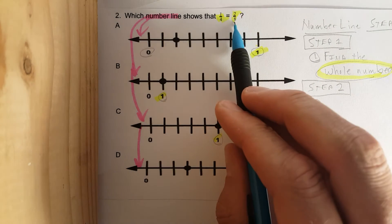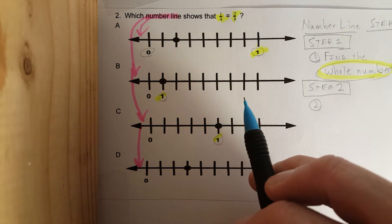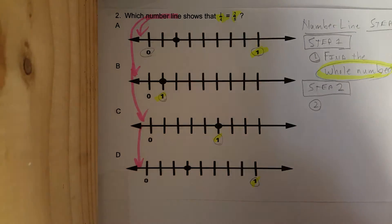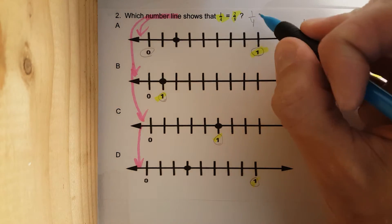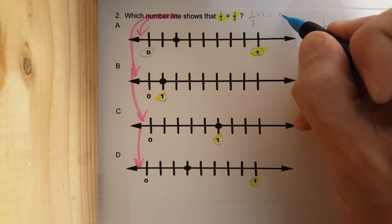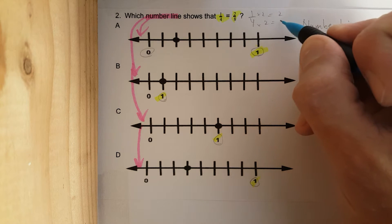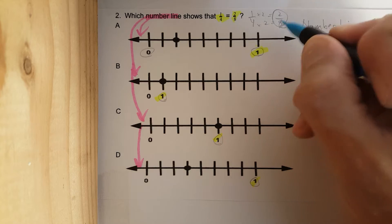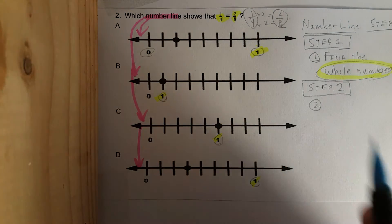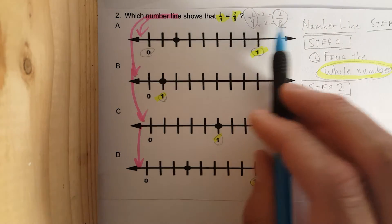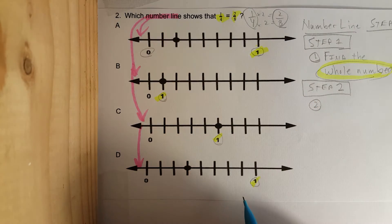Since we are dealing with fractions — one over four is equal to two over eight — right away I know that one times two is two and four times two is eight, so these two are equivalent fractions. But we need to prove it on a number line.